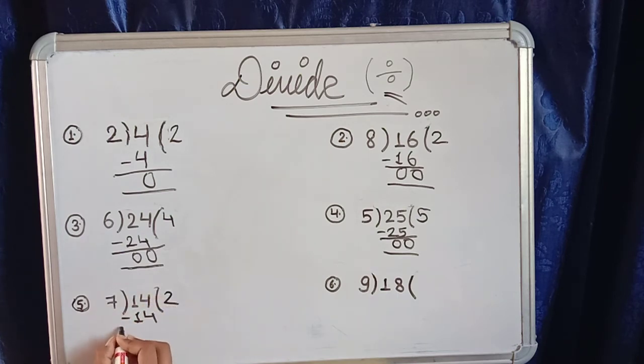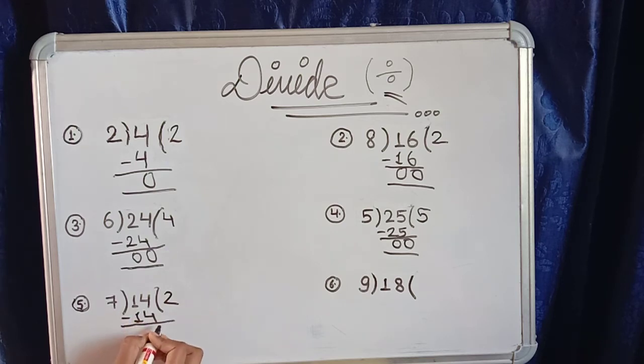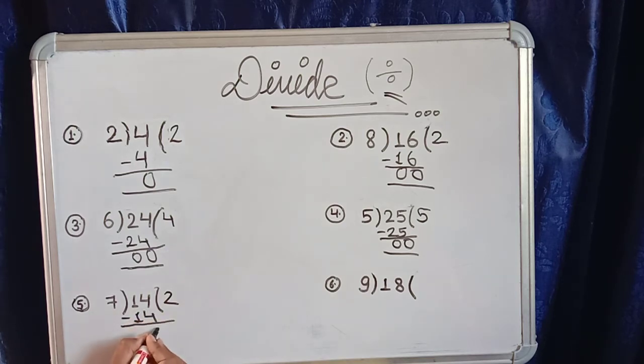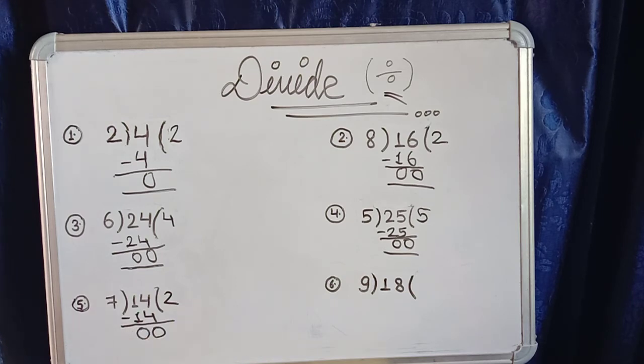We have 14 and we minus: 4 minus 4 is zero, 1 minus 1 is zero. Now let's go to question number six.